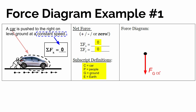Our subscript notation is: the first subscript is what kind of force it is, the next one is what's feeling that force, and the last one is what's actually causing that force. So it's the force of gravity on the car by the earth.